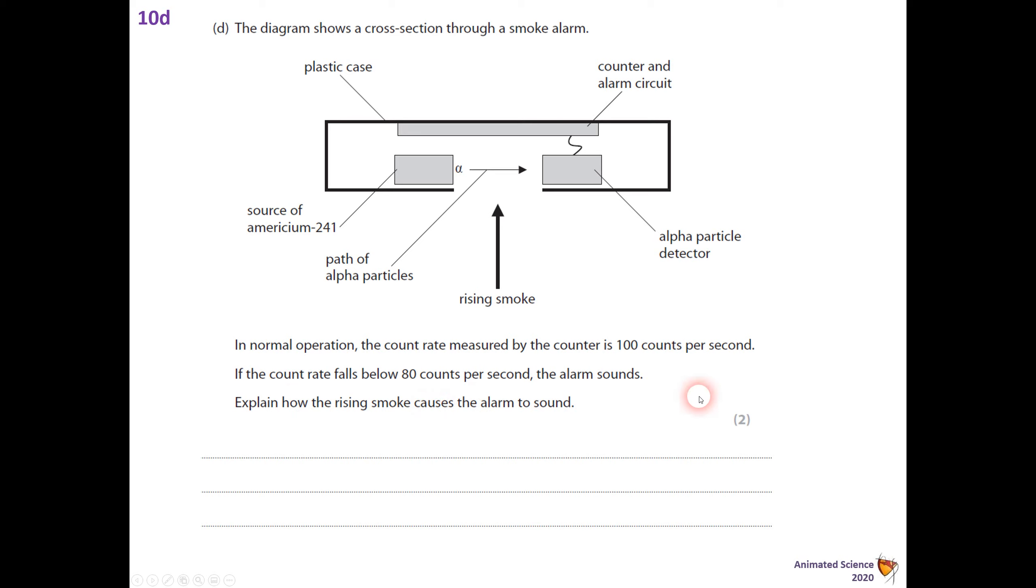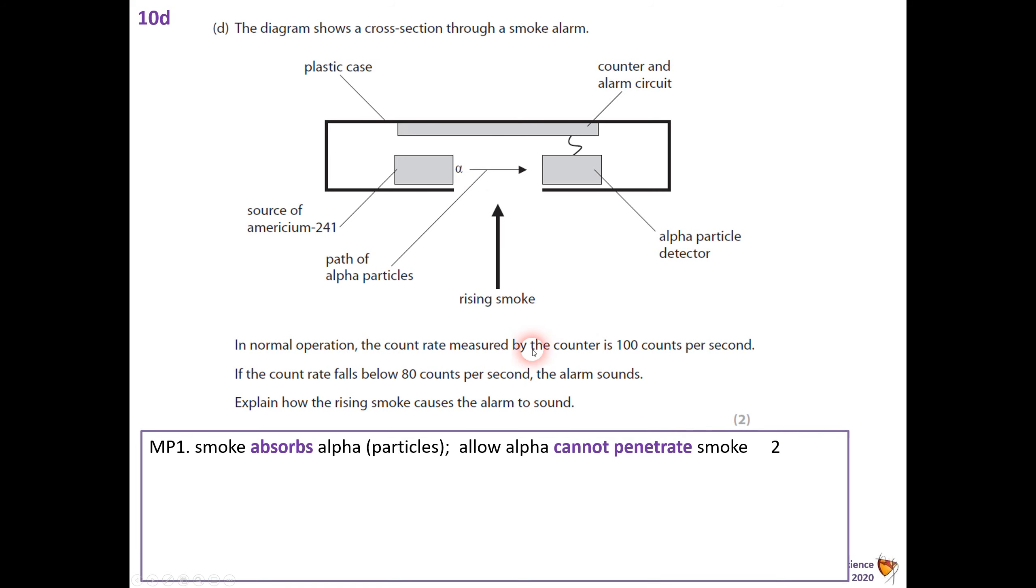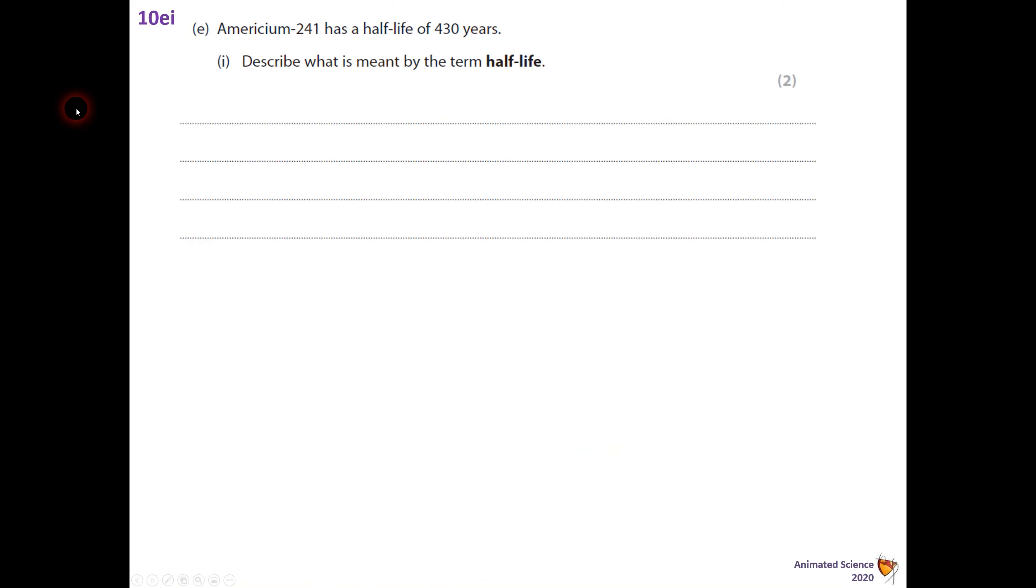You've got to learn this stuff. So when americium decays, it emits alpha particles to form neptunium, which has the symbol NP. Complete the nuclear equation for the decay of americium-241. So it's really, really simple. You should recognize an alpha particle has a mass of four, two protons, and thus you have to subtract two off the original proton number.